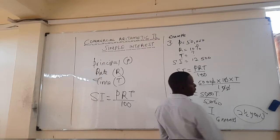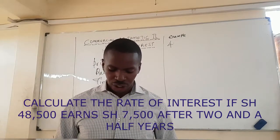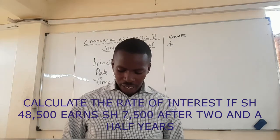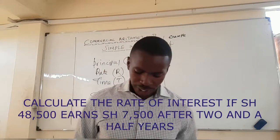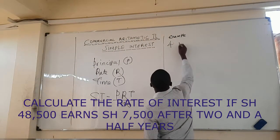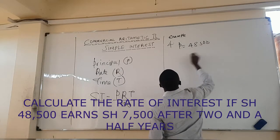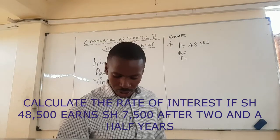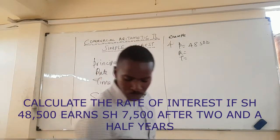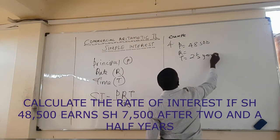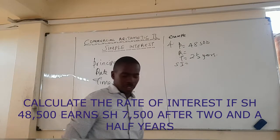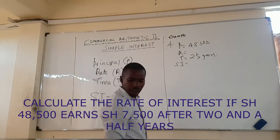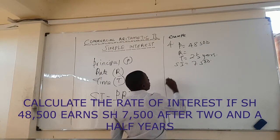Example 4: Find the rate of interest if 48,500 shillings earns 7,500 after 2 and a half years. Here the principal is 48,500, the time is 2 and a half years, and the simple interest earned is 7,500. We want to find the rate R.